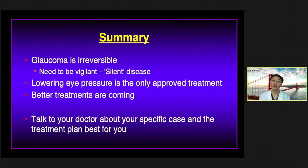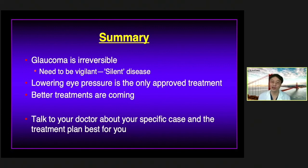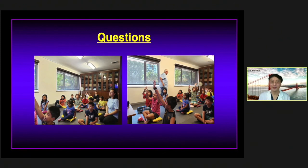In summary, glaucoma is an irreversible disease. It's very important to be vigilant in screening, detecting it early, getting it treated, and following its progression — because it's a silent disease. You can have this disease and not know it, and you can have progression and not know it. You need to be under a doctor's care and doing these tests to know whether you have the disease or are getting worse. The only approved treatment is lowering eye pressure, and the most important thing is to talk to your doctor about your specific case and treatment plan. I look forward to our discussion and any questions from the audience. Thank you very much.